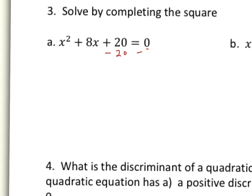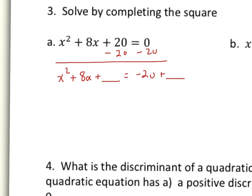I subtract 20 from both sides first, giving x² + 8x = −20, and I leave a space to complete the square. What value completes the square? It's (b/2)², so b is 8, 8 ÷ 2 = 4, and 4² = 16. I add 16 to both sides of the equation — you can't just add to one side. So now I have x² + 8x + 16 = −20 + 16, which factors to (x + 4)², equal to (x + b/2)².